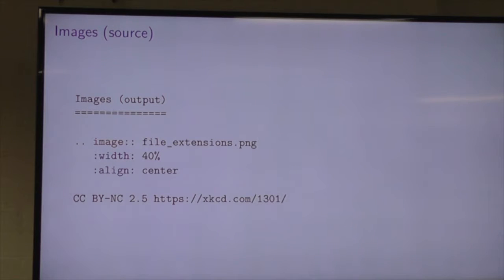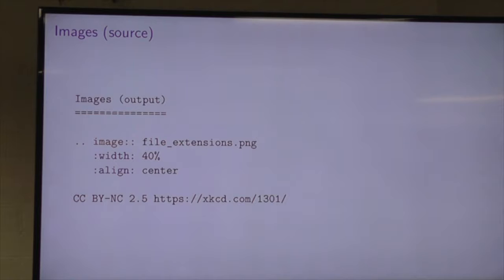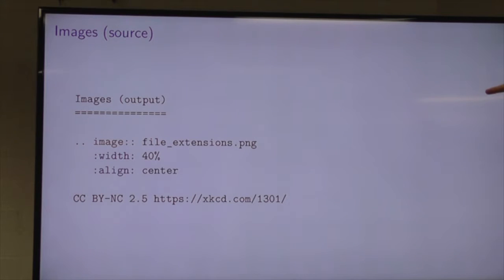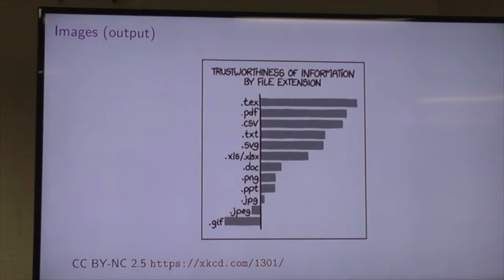Images: to include images or diagrams in slides, we use the image directive. The first argument is the path or URL to the image. We can specify arguments like the width — in the case of Beamer, that's a proportion of the frame width, or you can specify an absolute value in centimetres or inches — and the alignment. Then we get our image. This file is just sitting in the directory beside my reStructuredText source file, and pdflatex goes and picks it up and puts it in the document.